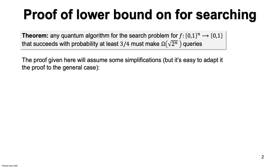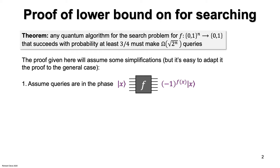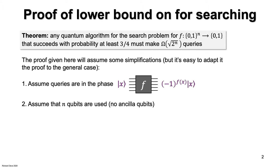I will make some simplifying assumptions. First, I'll assume that the function is always queried in the phase, like with Grover's algorithm. Second, I'll assume that the algorithm uses only n qubits — that is, no ancillary qubits are used. The purpose of these simplifying assumptions is to reduce clutter. It is very straightforward to adjust the proof to the general case. The more general proof will be just a cluttered-up version of the proof I'm about to explain. Nothing of importance is being swept under the rug in this simplified proof.